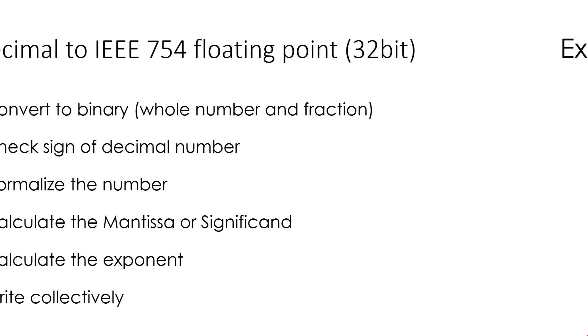Now let's take an example: 9.875. First step is to convert it into binary. Here we divide it into two parts: whole number and fraction, where 9 is the whole number and 0.875 is the fraction. 9 in binary is 1001.